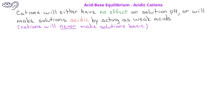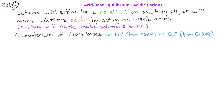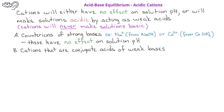When we look at cations, there are three different types. The first type is counter ions of strong bases. For example, the sodium ion, which is the counter ion to the hydroxide ion in sodium hydroxide, or the calcium ion from calcium hydroxide. Cations that are counter ions of strong bases have no effect on solution pH. The second type of cations are conjugate acids of weak bases. For example, the ammonium ion, NH₄⁺, is the conjugate acid of the weak base ammonia, NH₃. Cations that are conjugate acids of weak bases will act as weak acids to make solutions acidic.